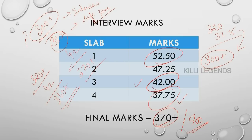The other category — this is the variable. For BC and MBC, we can fix 320 plus to 330 as safe zone. So if you are 320 plus or 330 plus, you can be in the safe zone. If you are 320, you can do interview and enter into service.